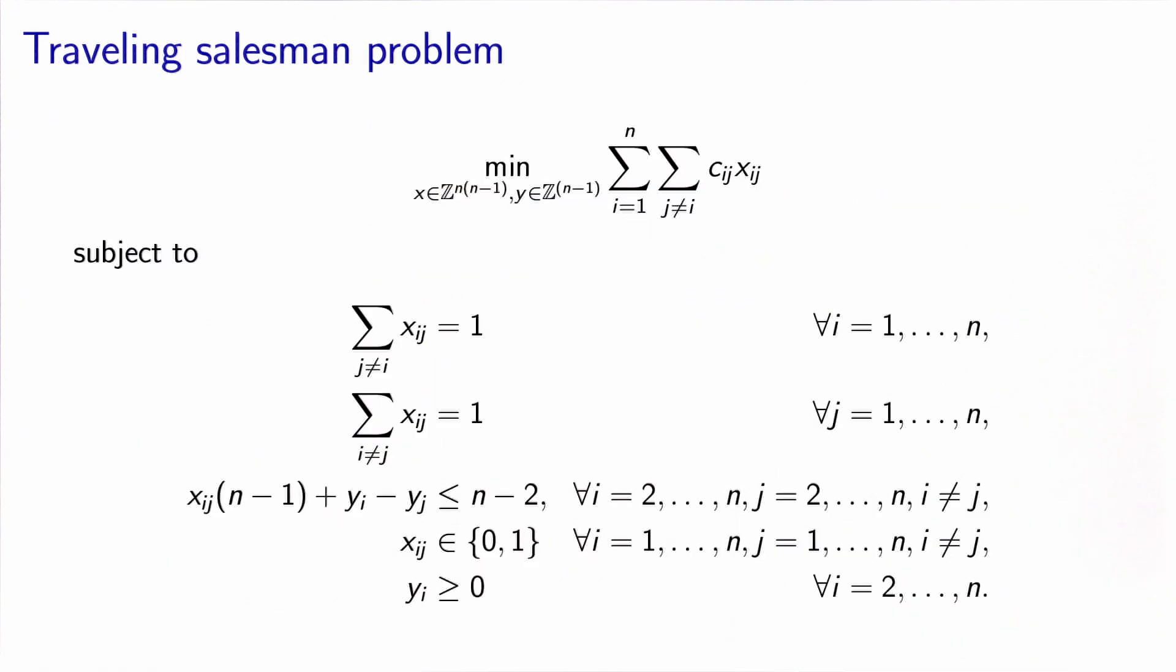Putting everything together, we have the formulation of the traveling salesman problem as an integer optimization problem. We minimize the total length of the tour, subject to the fact that each city must have exactly one successor, each city must have exactly one predecessor, and we have the subtour elimination constraints that we have defined here. xij are binary variables representing the fact that we decide to visit city j just after city i. And yi are integer variables that must be non-negative, representing the numbering of the cities in the tour.